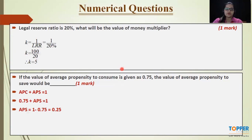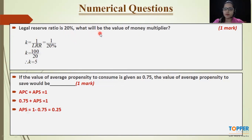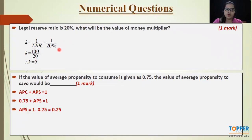Now let's solve the numericals. We will be solving numericals of macroeconomics because there were no numericals in microeconomics. The first question is of one mark, in which the legal reserve ratio is given as 20% and you are asked to calculate the money multiplier. The formula for money multiplier is 1 divided by the legal reserve ratio. Putting the value in the formula: 1 divided by 20% gives us a money multiplier of 5. If you have solved it correctly, you will get one mark.